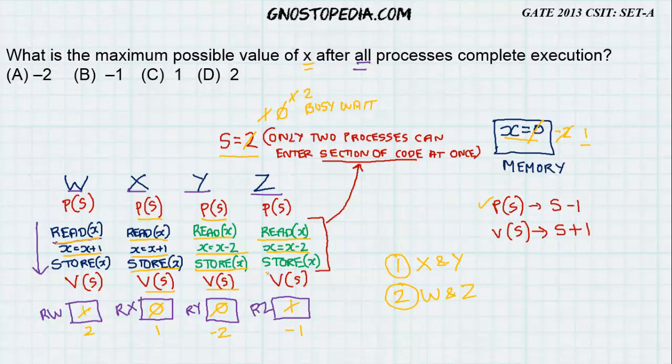The same way, if Z stores it first, the value of minus 1 is stored and x is replaced as minus 1. And finally, W stores the value of x and x is 2 and hence x can become 2. And finally, they release the variables in the same way and hence the answer is 2.